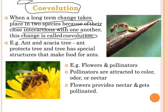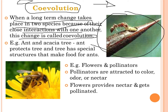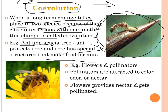An example of co-evolution is the ant and acacia tree. The ant protects the tree, and the tree has special structures that make food for the ants. Both are benefited from each other; they live in close interaction, and this long-term change in interaction is called co-evolution.